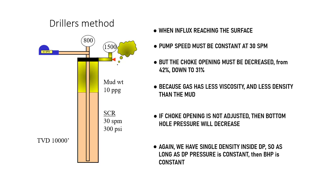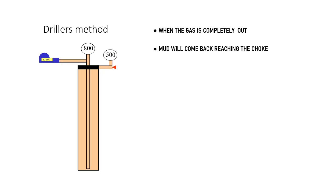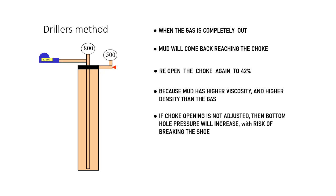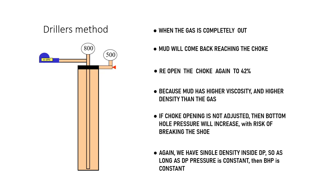Again, as long as we maintain drill pipe pressure constant, then bottom hole pressure will be constant. When all influx has been circulated out, the mud will come back reaching the choke. We have to reopen the choke to 42%. Remember, the mud is coming back at the choke and mud has higher viscosity and higher density than the gas. If the choke is not reopened, we may break the shoe.